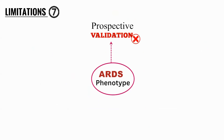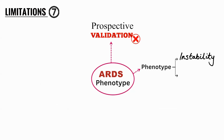All phenotyping has come from retrospective post-hoc studies. Even the Berlin definition took large retrospective data to identify groups called ARDS, including the current global definition. There is no prospective validation when determining phenotype. Once you have determined phenotype, there is class instability and a risk of misclassification. For example, what you may have called hyperinflammatory after a few days may become hypoinflammatory.